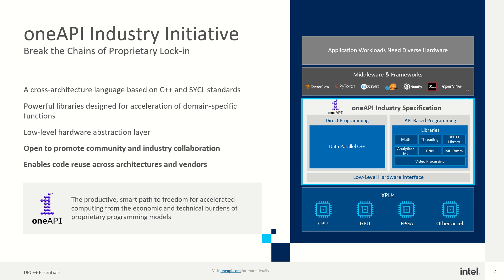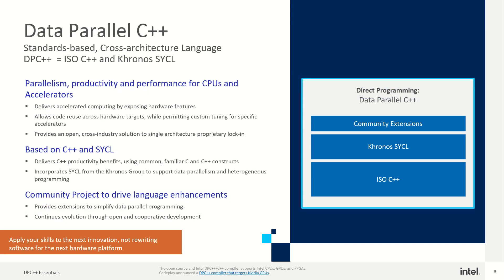We have a cross-architecture language based on C++ and SYCL standards. Powerful domain-specific libraries are available, and this is a low-level hardware abstraction layer. DPC++ — Data Parallel C++ — is nothing but ISO C++ plus Khronos SYCL. Using these two together gives you parallelism, productivity, and performance for CPUs and accelerators.